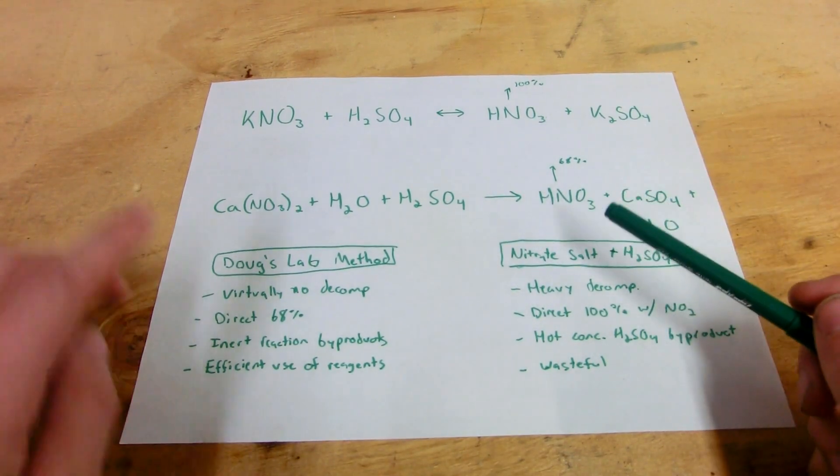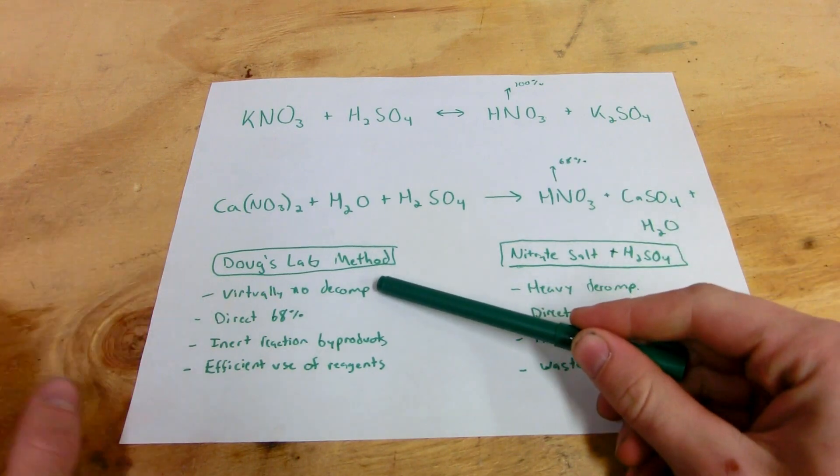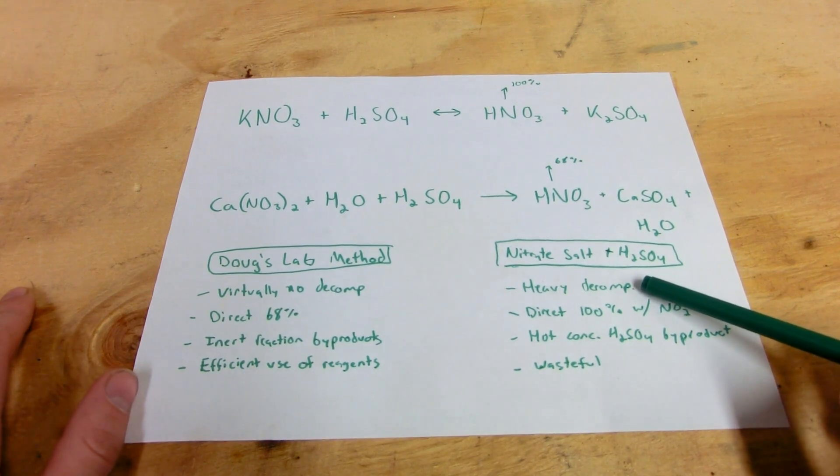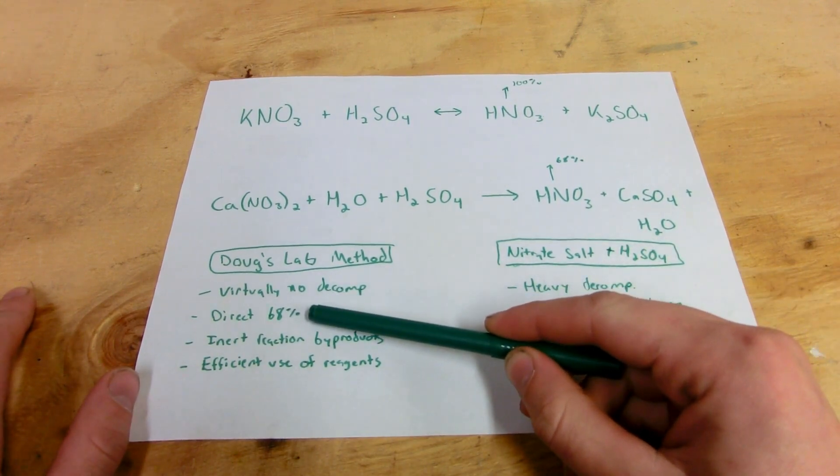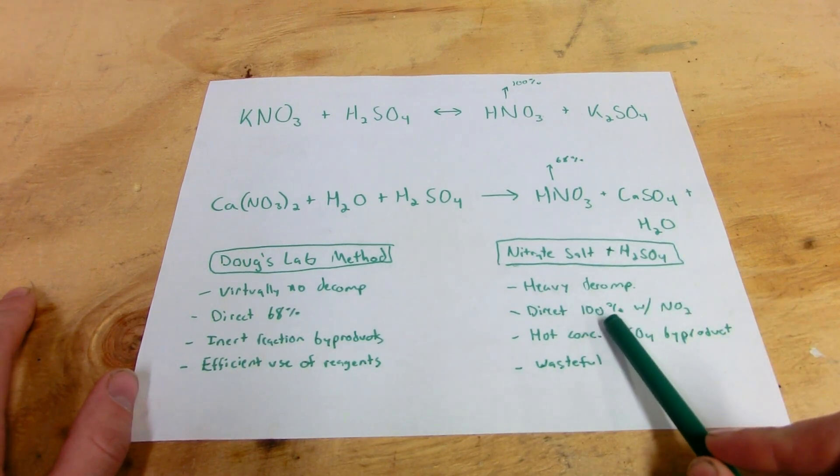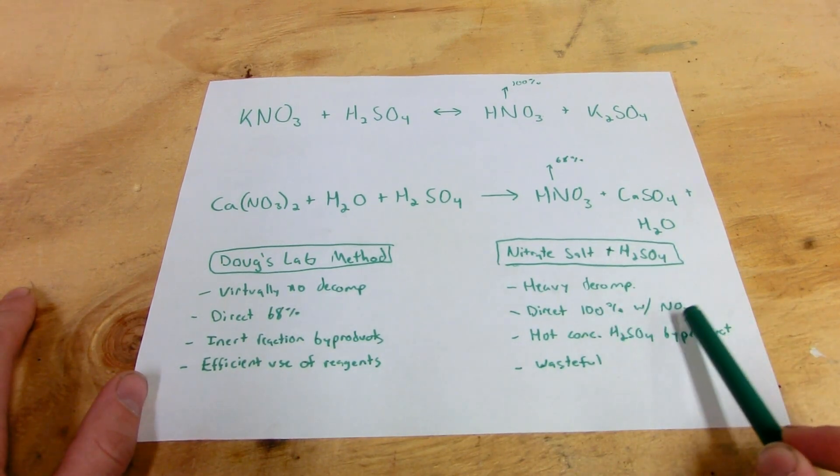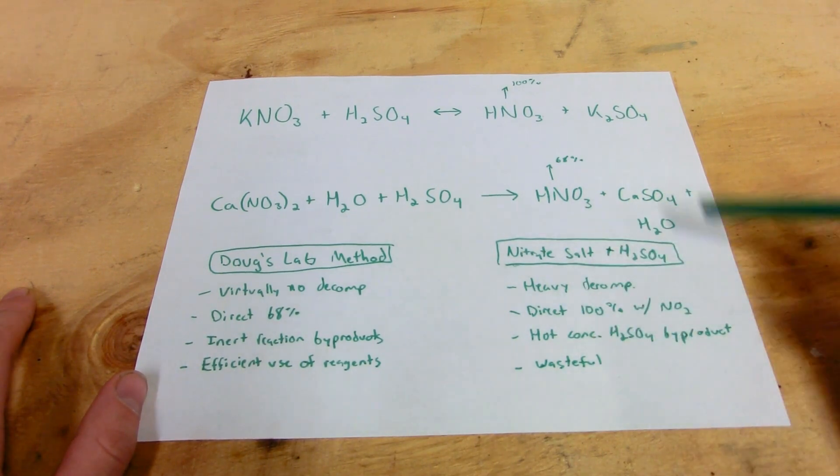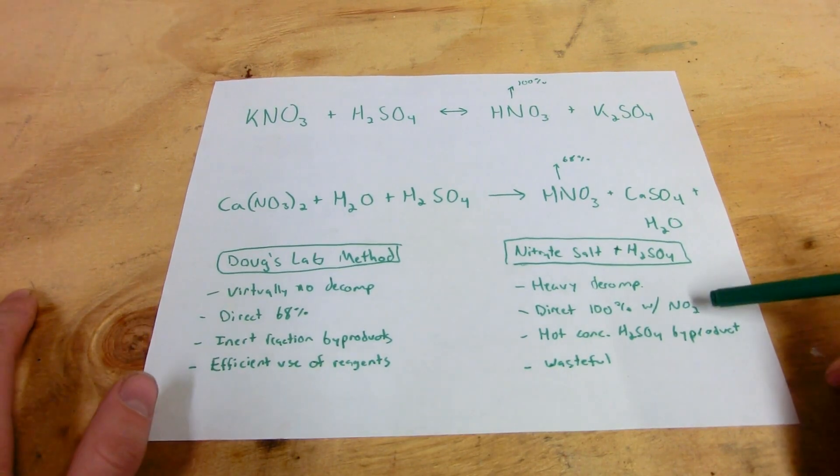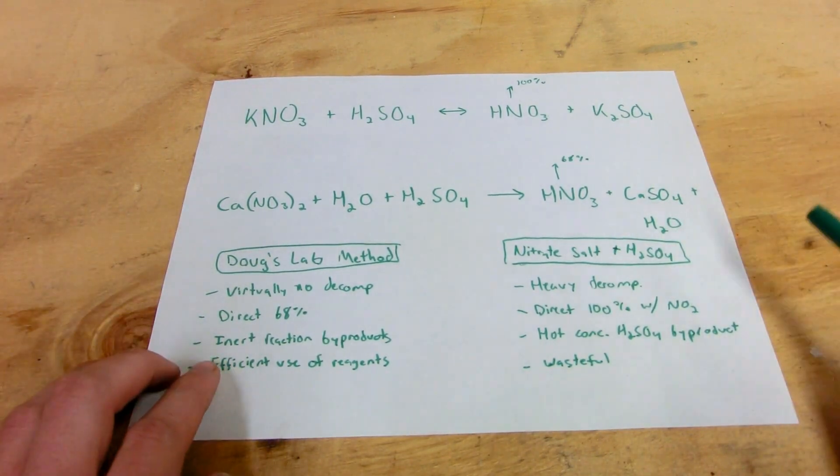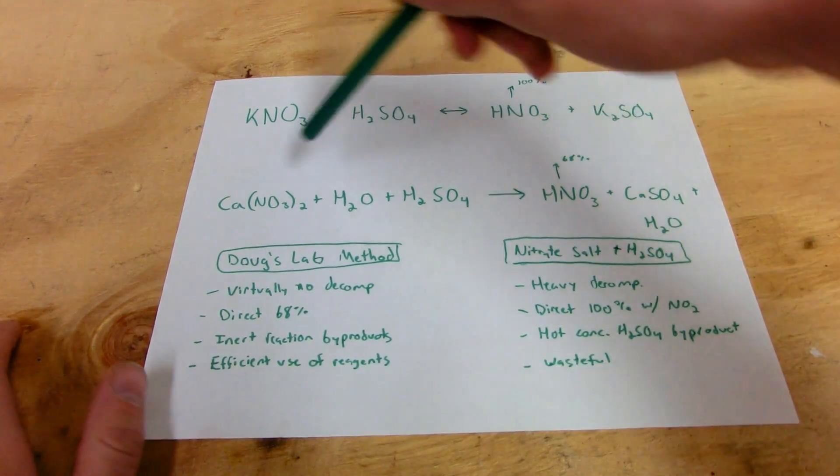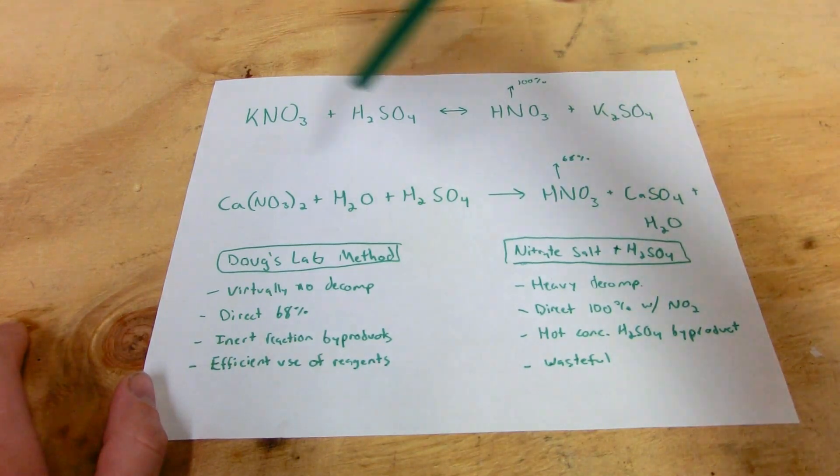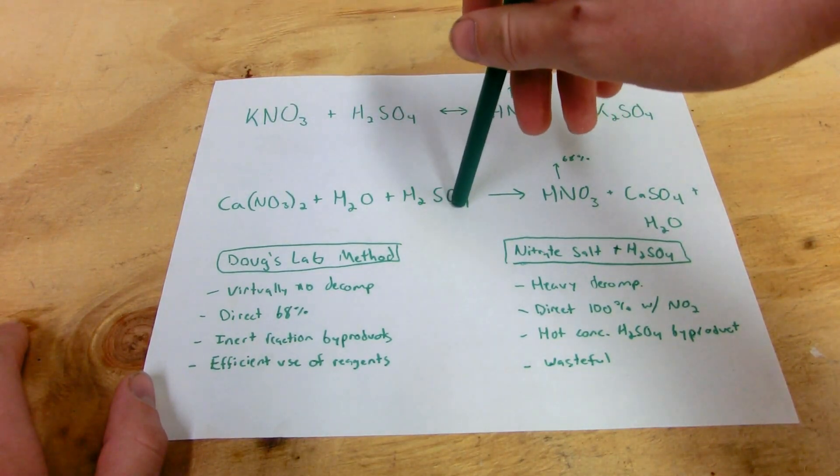The reason I go for 68% nitric acid is because nitric acid forms an azeotrope with water at 68% that boils at 121 degrees Celsius. Using this method, you can just distill off direct 68% nitric acid. Because you're not distilling it off at 100%, you have virtually no decomposition. You know almost exactly the concentration of nitric acid coming off based on the temperature because it locks in at azeotrope of 68%.